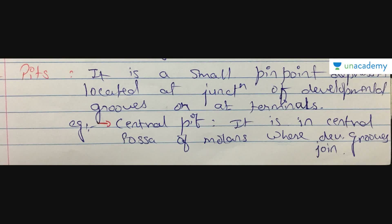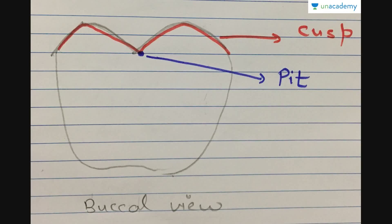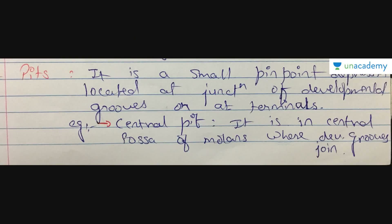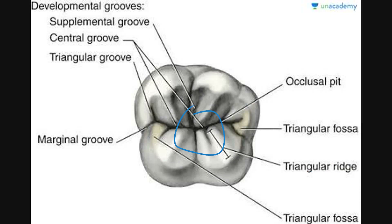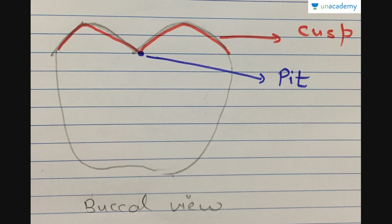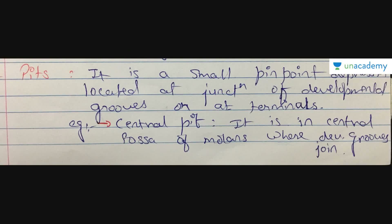A pit is a small pinpoint depression. Remember: a sulcus is a valley-like depression, fossae are irregular concavities, and pits are pinpoint depressions. Pits are located at the junction of developmental grooves or at their terminals. The central pit is where two cusps meet on the occlusal surface. The central fossa of molars is where developmental grooves join, and the occlusal pit is where all the grooves — buccal, lingual, and marginal — meet at a point.